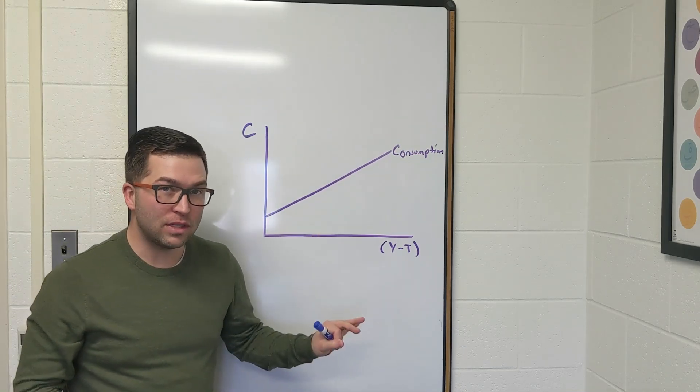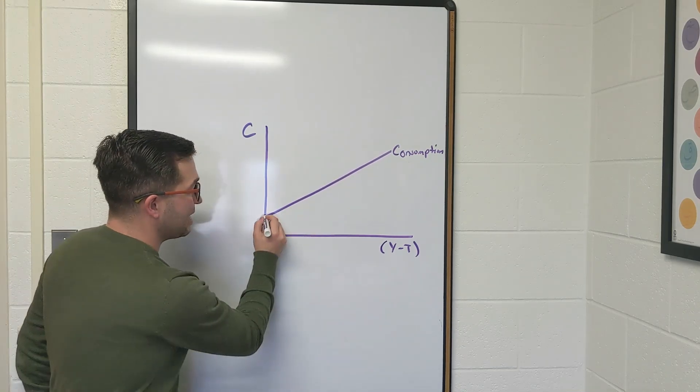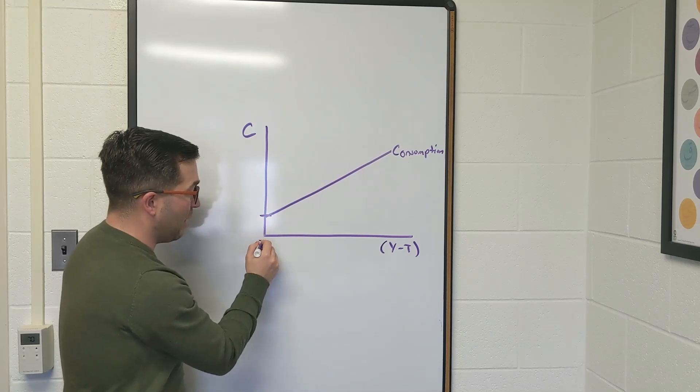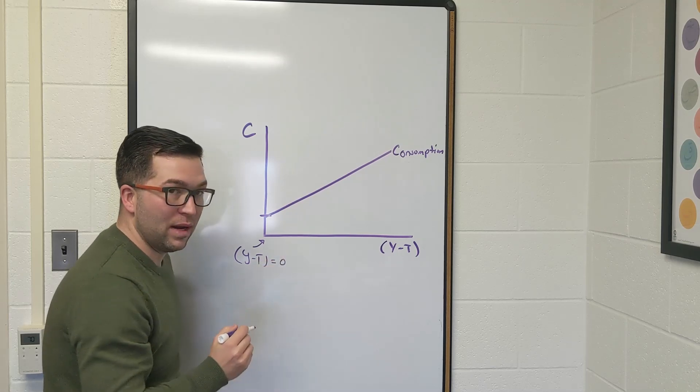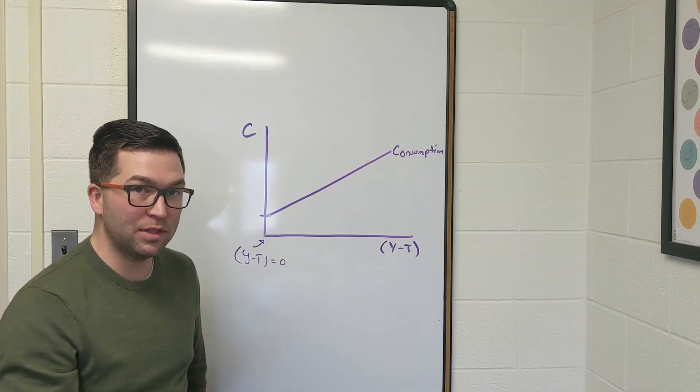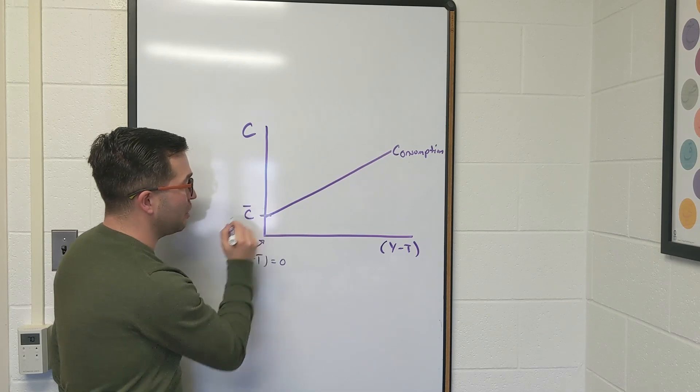There's a few things that are interesting here. Like I just said, it's not starting at zero. This is the origin. So at this point, you would have y minus t equal to zero. We'd have our disposable income equal to zero, but there still is some level of consumption.